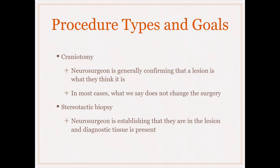For craniotomy specimens, the neurosurgeon is generally confirming that the lesion is what they think it is — they generally have a good idea based on radiology. In most cases, what we say does not change the surgery. Whether it's a metastatic carcinoma, high-grade glioma, or metastatic melanoma, the goal is a gross total resection. What may change the procedure is a hematopoietic lesion or non-neoplastic lesion they thought was a tumor — such as an abscess or lymphoma, where gross total resection is not necessary.